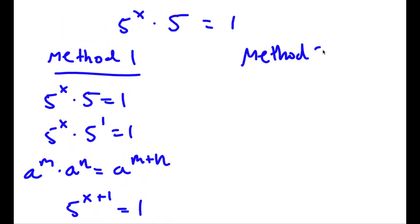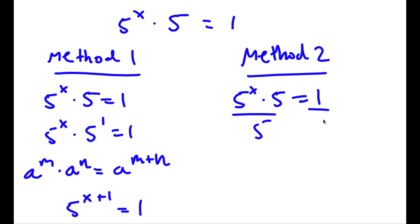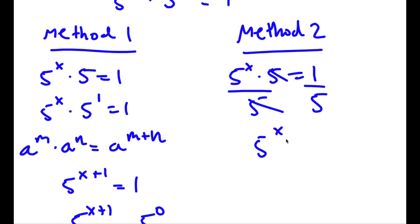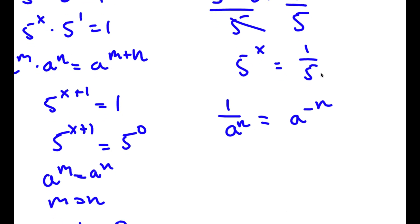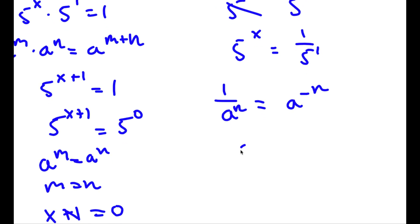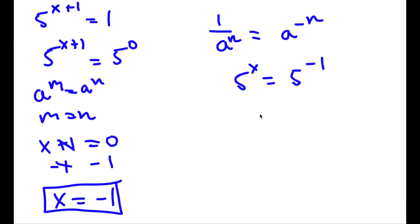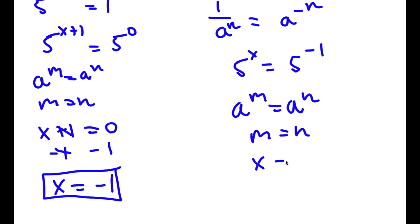For method 2, again start with 5 to the power of x times 5 is equal to 1. But this time, instead of multiplying, I'm going to divide 5 on both sides. So now I have 5 to the power of x is equal to 1 over 5. If I have something in the form 1 over a to the power of n, this is equal to a to the power of negative n. So 1 over 5 is the same as 1 over 5 to the power of 1, which equals 5 to the power of negative 1. Since a to the power of m equals a to the power of n means m equals n, x is equal to negative 1.